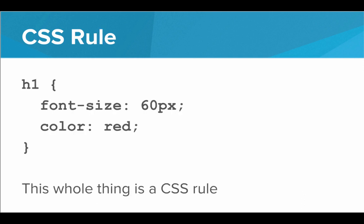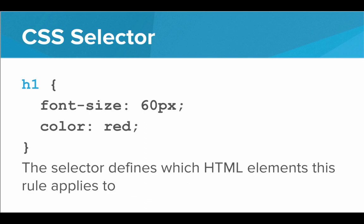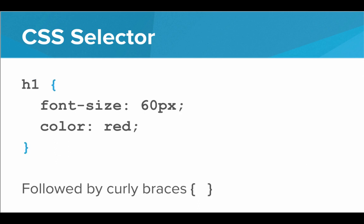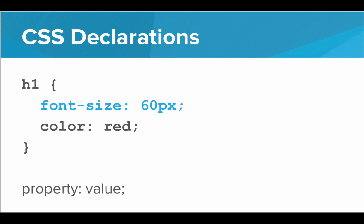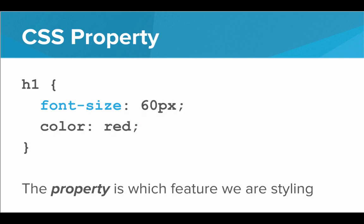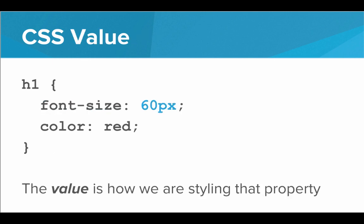What exactly does CSS look like? Writing CSS code involves defining CSS rules. The first part of a CSS rule is the CSS selector, which defines exactly which HTML elements this rule is going to apply to. For example, this is saying the rule will apply to all H1s on the page. After the CSS selector, we have curly braces, and inside the curly braces we have one or more CSS declarations. These declarations are what actually define the style for this selector.